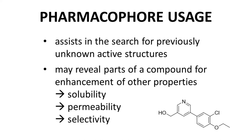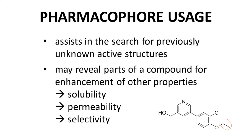By predicting on-target potency, we can also presumably predict efficacy as well. Furthermore, the pharmacophore model can reveal sites of a molecule that might be modified to tune other properties like solubility, membrane permeability, and maybe target selectivity. For example, based on our pharmacophore model, this part of the aromatic ring is not critical for target binding. If we need to change the solubility of this molecule, we might try making changes to this part of the molecule rather than the parts that are vital for target engagement.